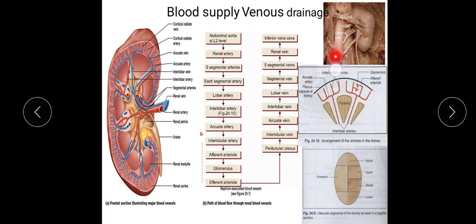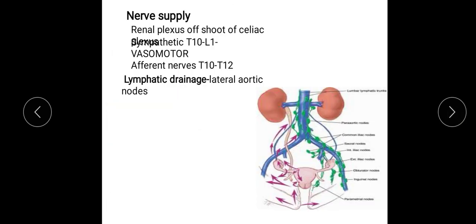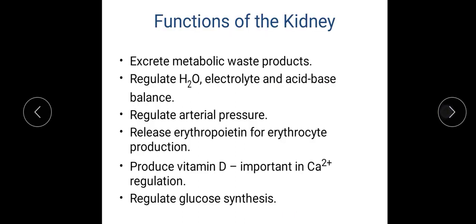The nerve supply: the kidney is supplied by the renal plexus, which is an offshoot of the celiac plexus. The sympathetic nerves come from T10 to L1 and are vasomotor in nature. The afferent nerve fibers come from T10 to T12 spinal nerves.